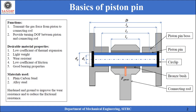The function of a piston pin is to transmit the gas force from the piston to the connecting rod, which will ultimately be transferred to the crankshaft. It is also used to provide a turning degree of freedom between the piston and the small end of the connecting rod.